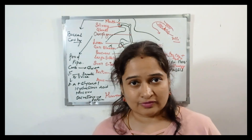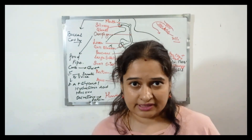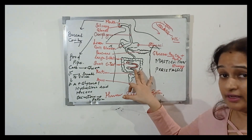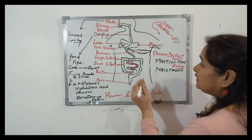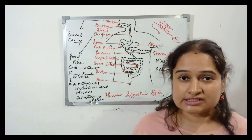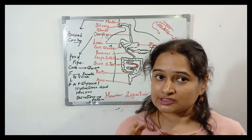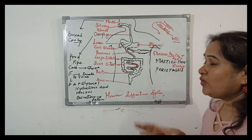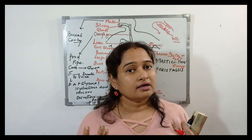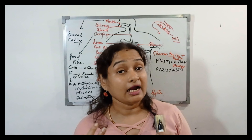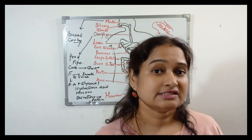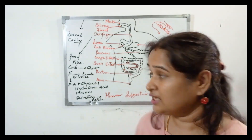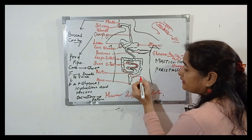What about the undigested food remaining in the small intestine? Not all food is digested — some amount of undigested or unabsorbed food left in the small intestine enters into the large intestine. The large intestine is around 1.5 meters long but is called large because it is wider than the small intestine. Once the undigested food enters the large intestine, the extra amount of water and salts are absorbed, converting it into a semi-solid paste, also called feces, which is stored temporarily in the rectum.